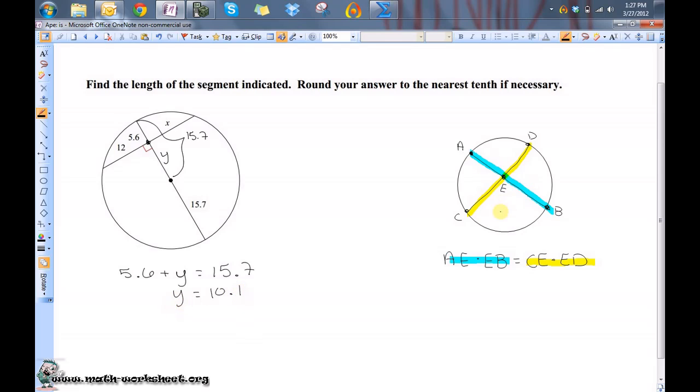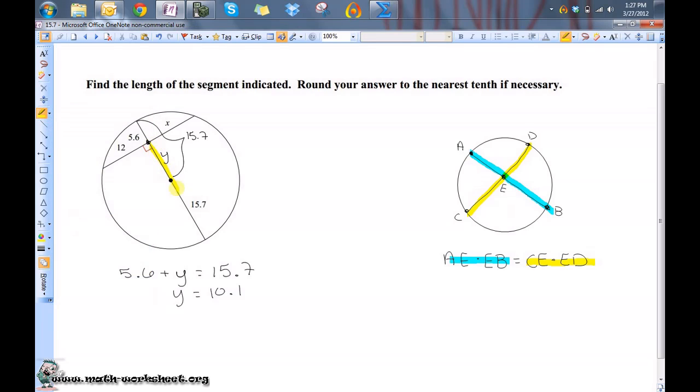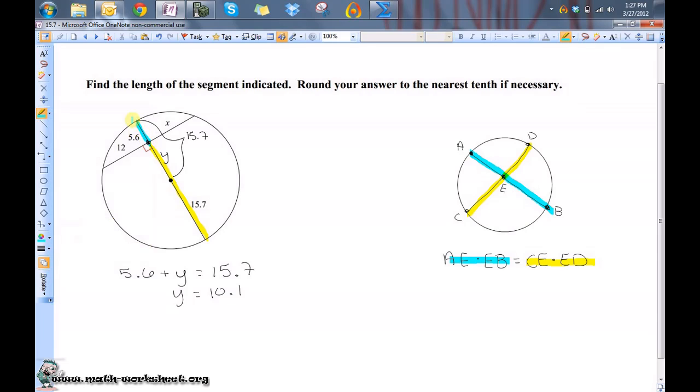To be able to use this property, we need to know this entire length here and this entire length here. We found that this was equal to 10.1, so this entire length will be 10.1 plus 15.7 or 25.8.